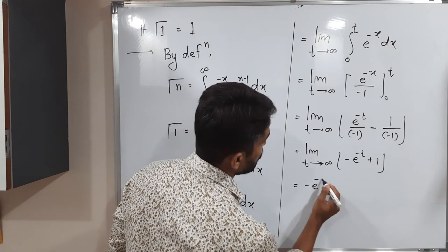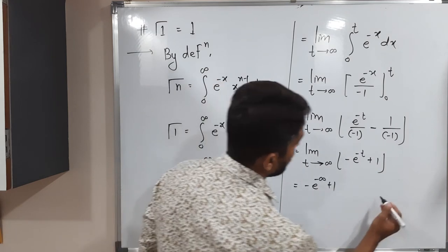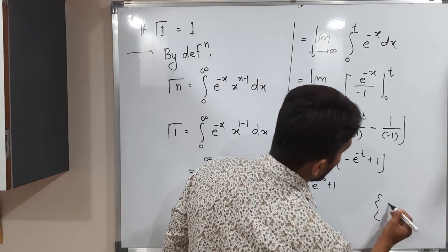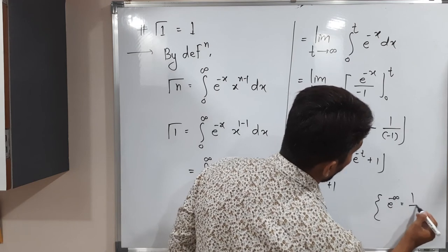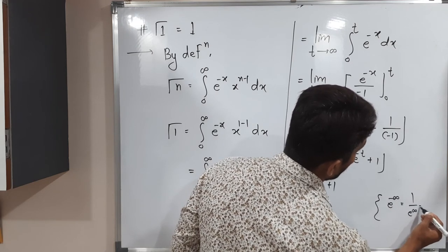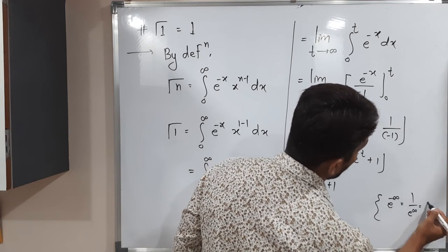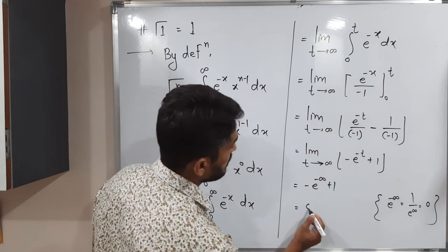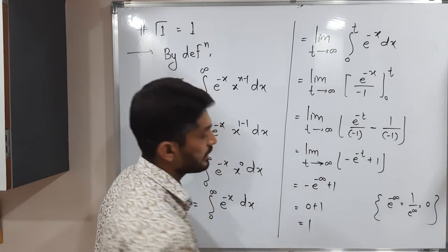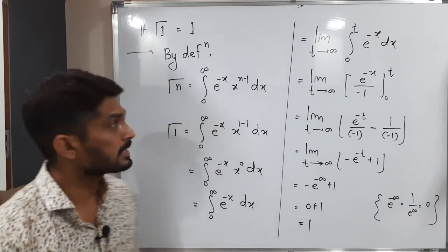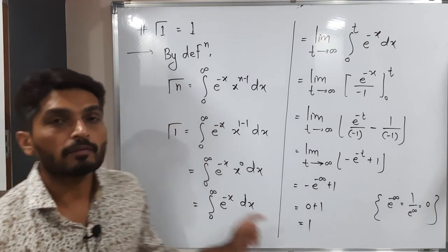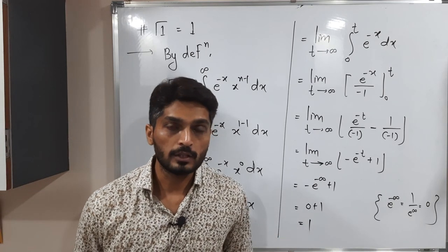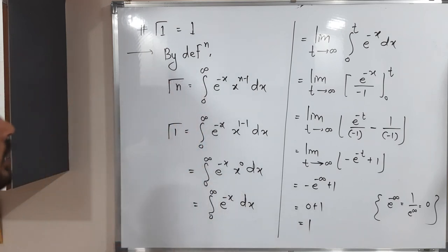Now applying the limit as t tends to infinity: e raised to minus infinity means 1 upon e raised to infinity, which equals 1 upon infinity, which is 0. So it becomes 0 plus 1, which means the answer is 1. We started with Gamma(1) and finally we got its value is 1. So the value of Gamma(1) is 1.